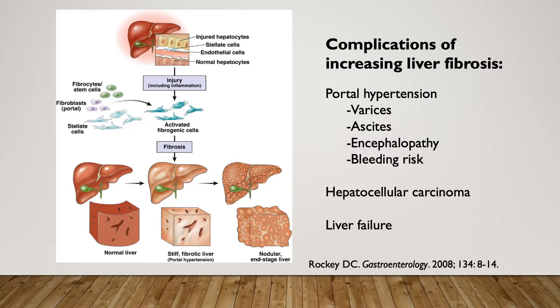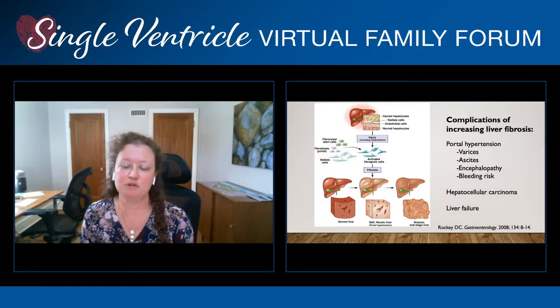We do sometimes see nodules form within patients with Fontan physiology. These nodules are oftentimes benign due to the altered blood flow, but sometimes they can be malignant and develop into hepatocellular carcinoma, something we screen for very closely. That is a treatable cancer — you can resect part of the liver or give therapies. But oftentimes these patients do need a liver transplant if hepatocellular carcinoma is found. Patients can also develop liver failure, which is very rare in the Fontan population but can happen if you have a very damaged liver and undergo a big procedure without treatment.